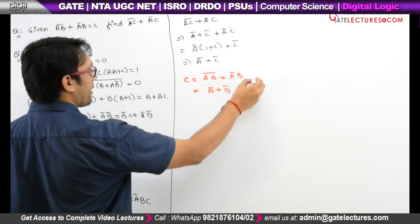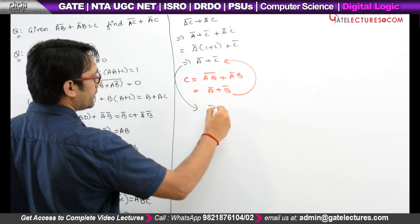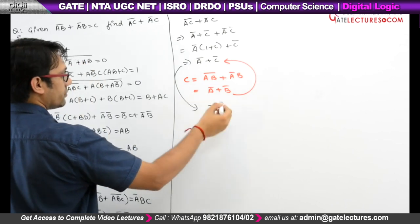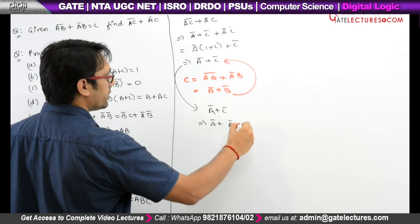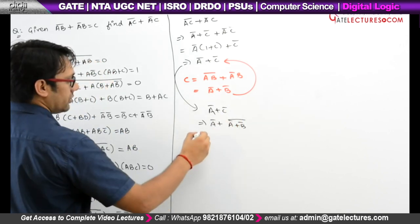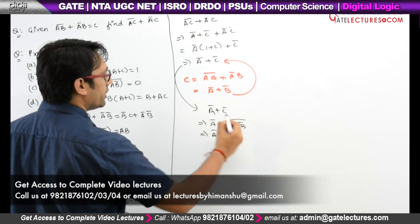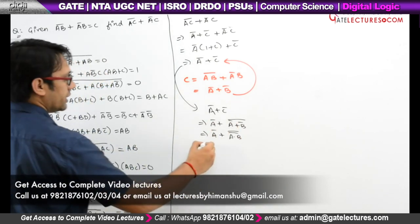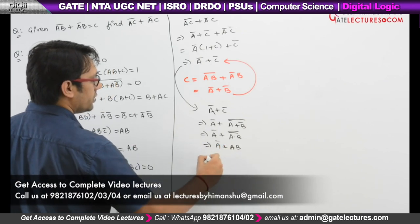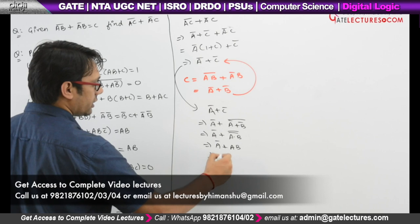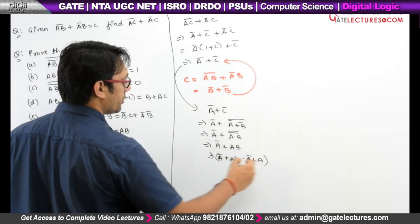Put these values into the above equation. It is A' + C'. Put the value of C here, so it is A' + (A' + B')' which can be written as A' + (A·B')' complement, which is A' + AB.